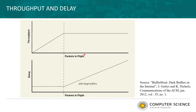If we look at what happens to the delay in the same situation: in the beginning, when you increase the rate of packet sending into the network, nothing happens to the delay — it stays small because there is no queuing yet. Once you reach the point where your sending rate meets the network capacity, delay will start to accumulate. If our buffers are large, this delay will just accumulate more and more as the sending rate increases and we get more packets in flight, which can cause a significant problem.